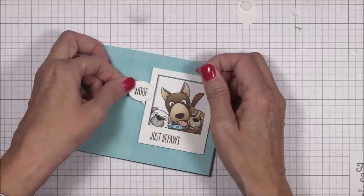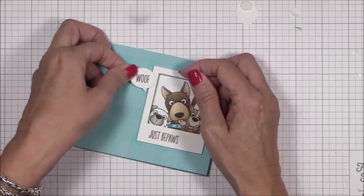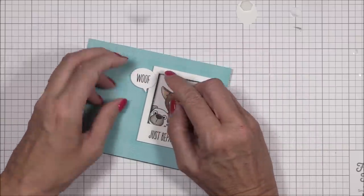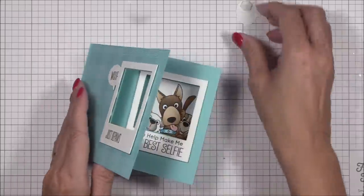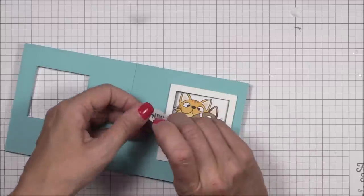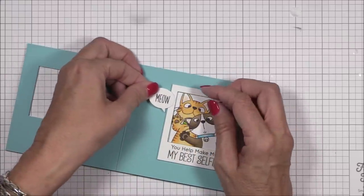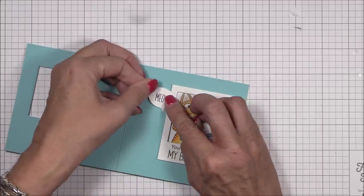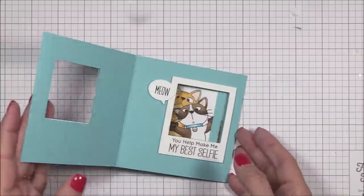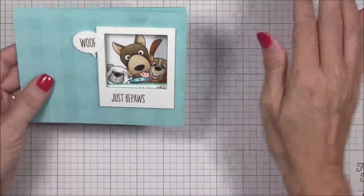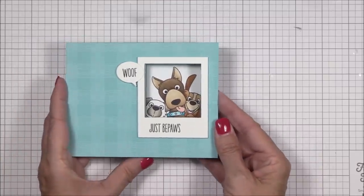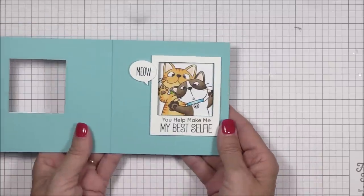I've added a foam square to the back of the Woof speech bubble, and I'm placing that to the left of the dog image on the front of the card. I'll do the same thing on the inside of the card with the Meow speech bubble. I didn't show it on camera, but I added some ellipses at the end of the Just Be Paws sentiment with a black marker so that the recipient knows that the sentiment will be finished off on the inside of the card.